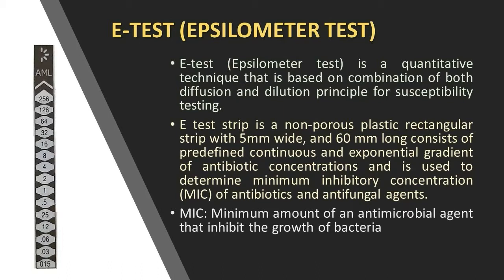The E-test strip is a non-porous plastic rectangular strip, 5 millimeter wide and 60 millimeter long, consisting of predefined continuous and exponential gradient of antibiotic concentrations. It is used to determine the minimum inhibitory concentration (MIC) of antibiotics and antifungal agents. MIC is the minimum amount of an antimicrobial agent that inhibits the growth of bacteria.